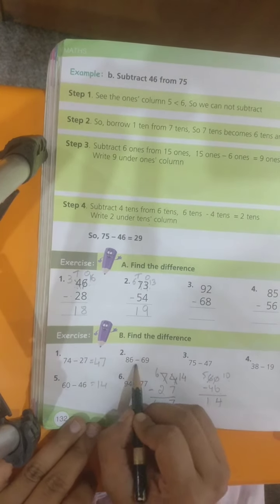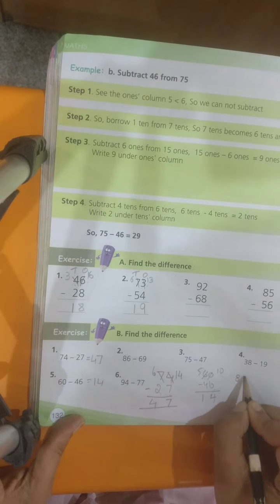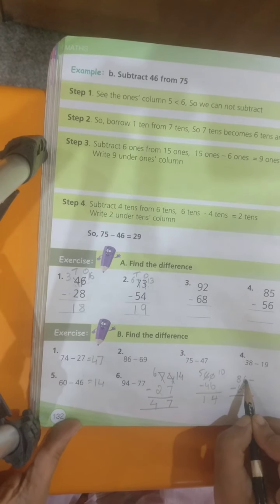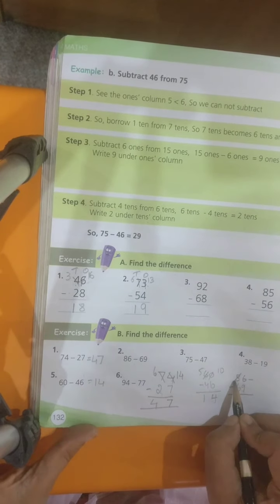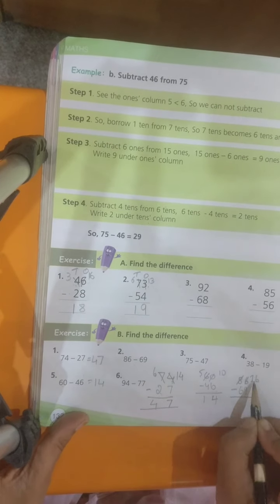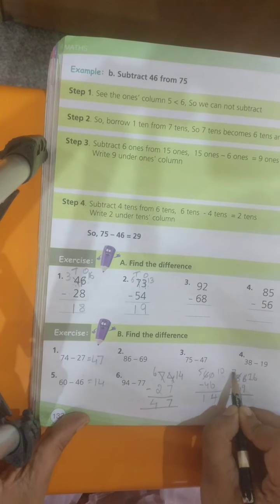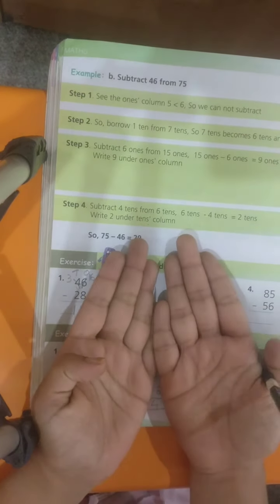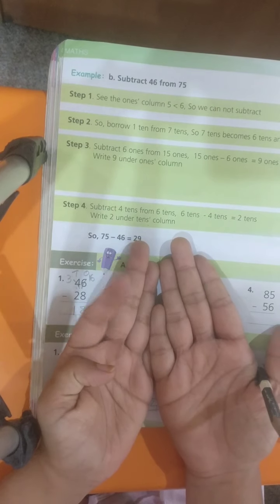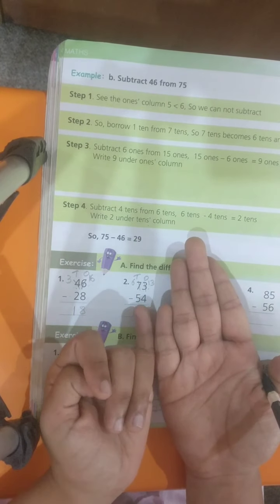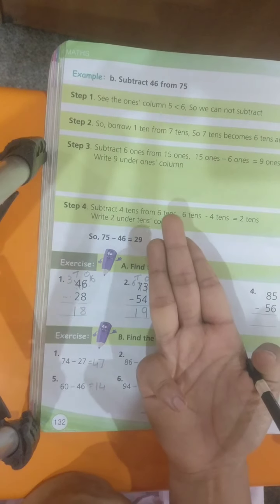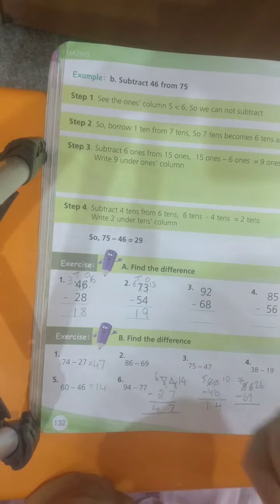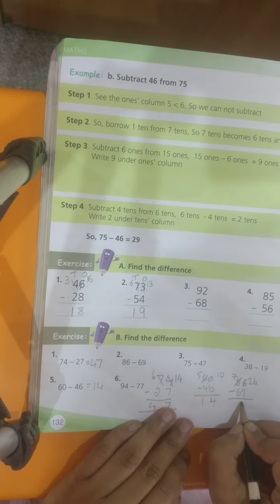Similarly, let's do the second sum here. 86 minus 69. Again, I have small number on the top. So, let's borrow. 6 becomes 16. 8 becomes 7. Now, start counting. 16 in your mind, 9 in your finger. Before 16, 15, 14, 13, 12, 11, 10, 9, 8. And 7.